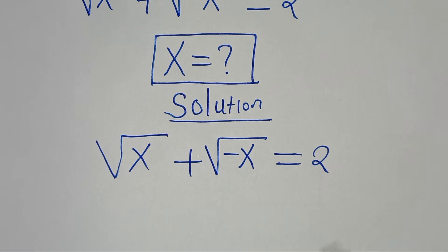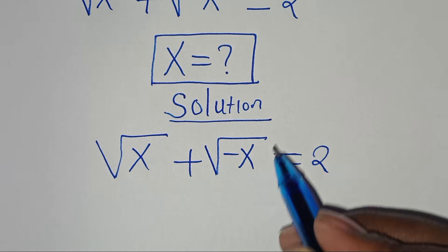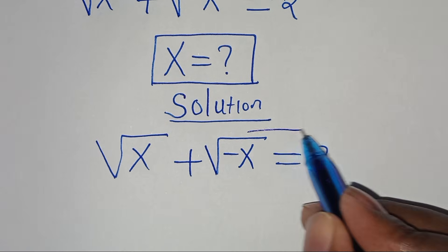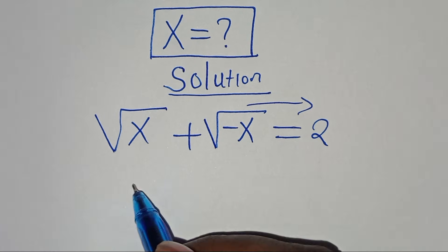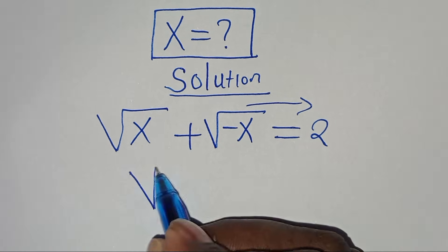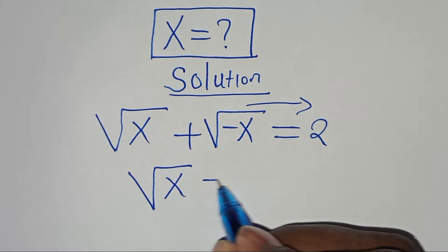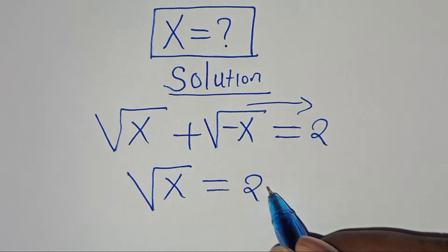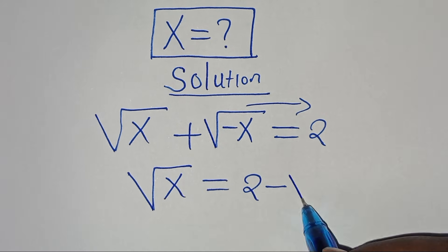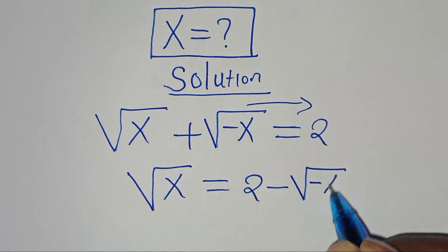The first step is to take the square root of minus x on the right hand side, so that now we have the square root of x is equal to 2 minus the square root of minus x.